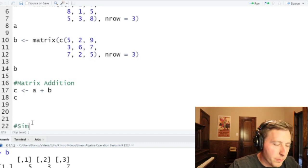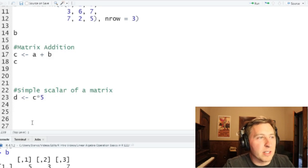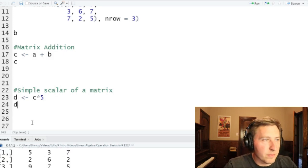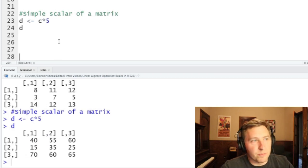And next we're going to do a simple scalar of a matrix and this works exactly as you'd probably expect here. So we're just going to take the C matrix and we're going to scale it by value of 5. We'll run that and print that out real quick. And as you can see, 8 times 5 is 40, 3 times 5 is 15, 14 times 5 is going to be 70. So scaling matrices is just as easy as adding them.